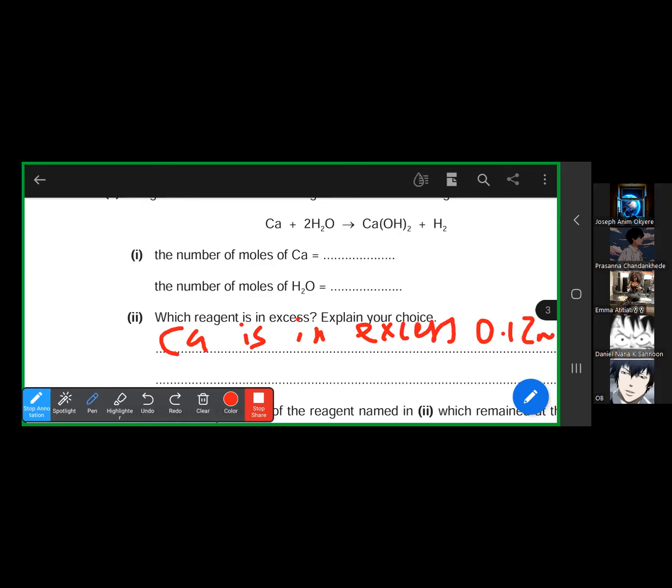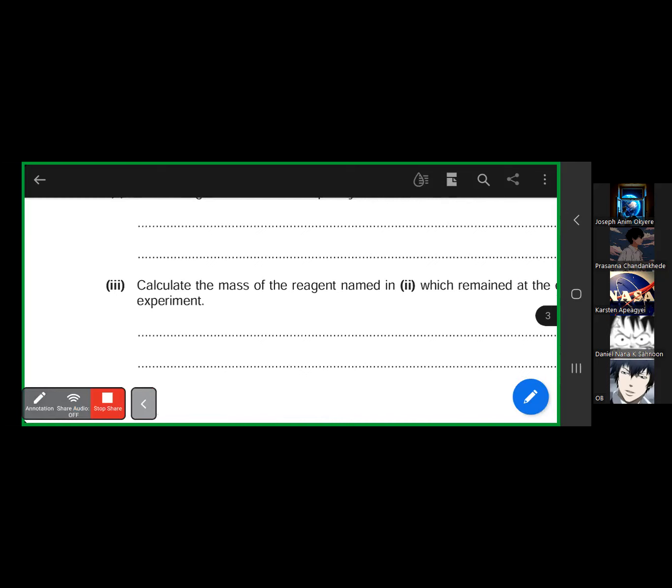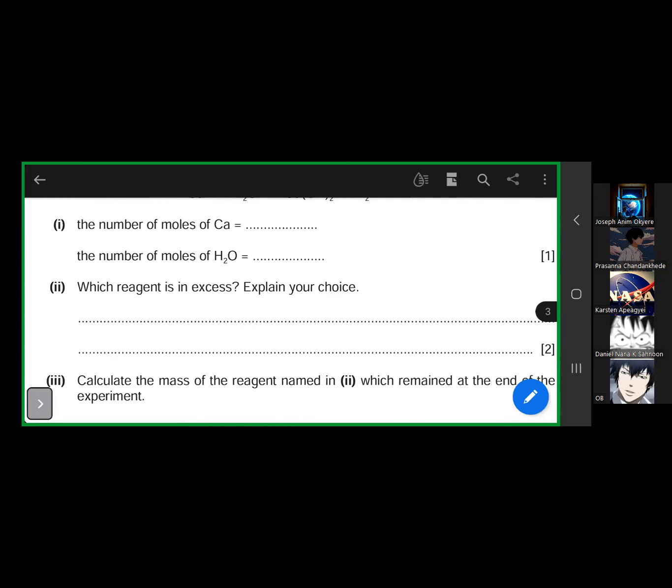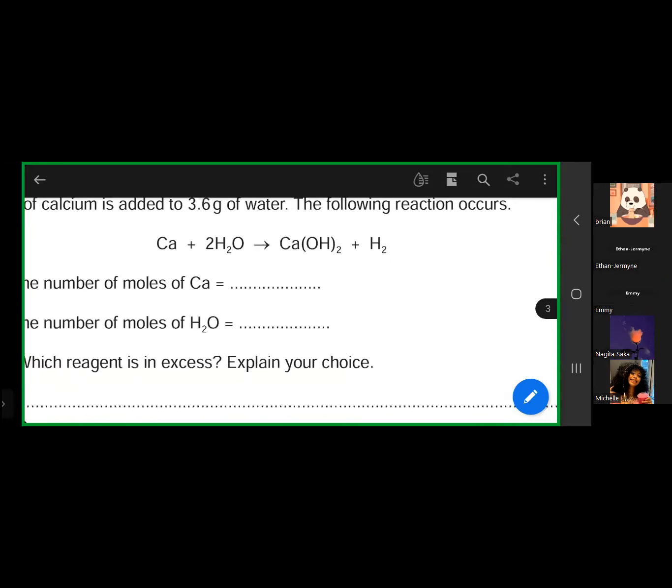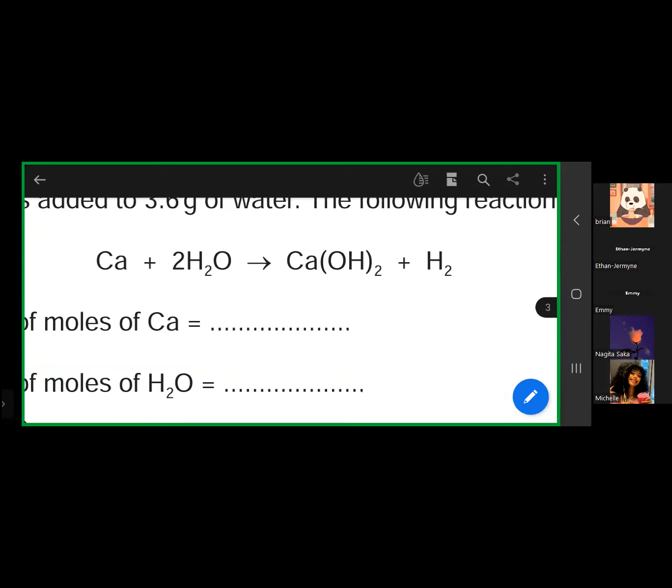Carsten, do you understand? Now we're going to use this to calculate the mass of the reagent which remains at the end. If calcium is in excess, that means not all was used for the reaction. Some remains. Water is limited, so when water finishes, the reaction cannot continue again. I know some people are saying, 'What is all this?' because you're not seeking understanding. You're just looking at your worksheet. What if I mix up values? You'll be stuck.